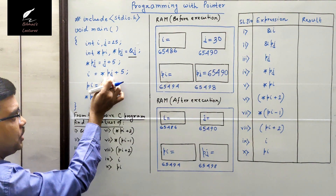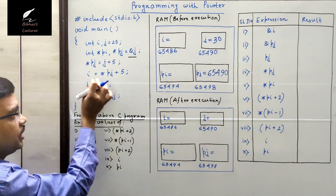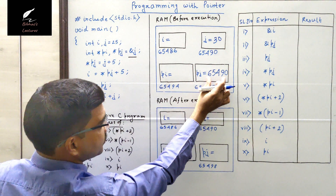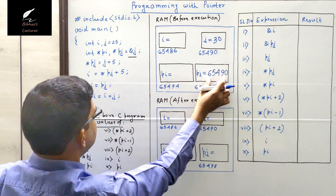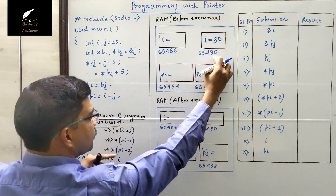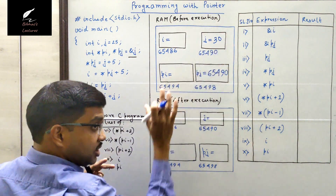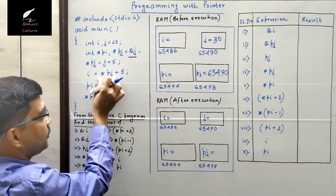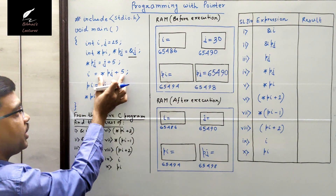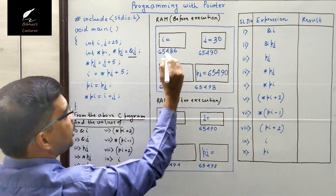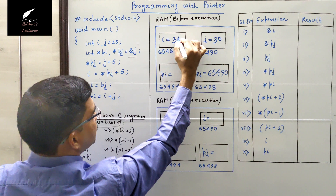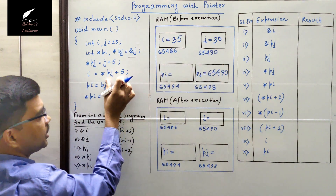In the fourth line we are assigning the value asterisk pj plus 5 to variable i. pj is 65490, so asterisk pj is the value present at 65490, which is now 30. So 30 plus 5 equals 35, and this 35 will be assigned to variable i. So now the variable i value is 35.